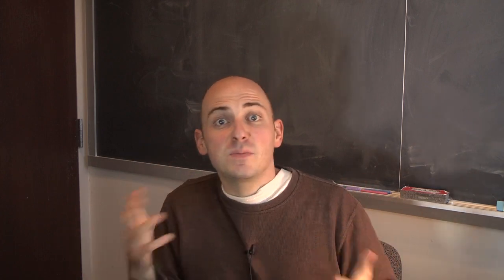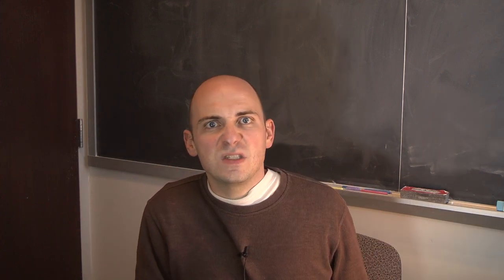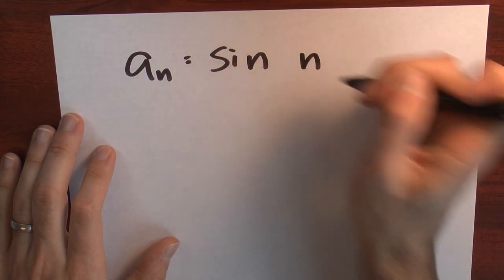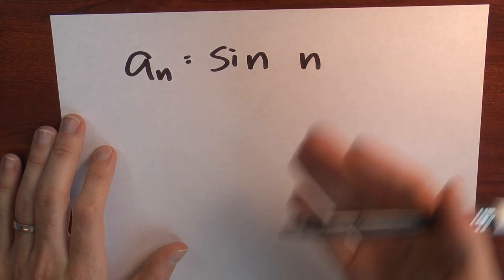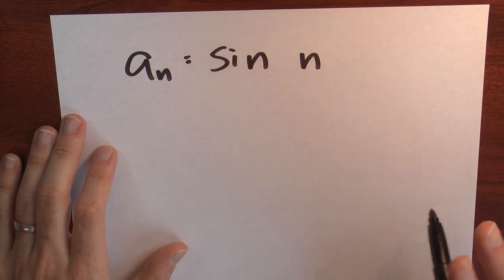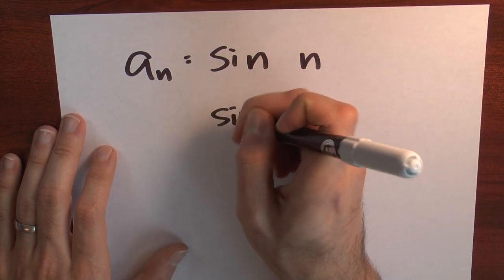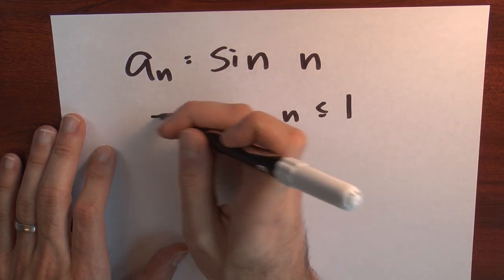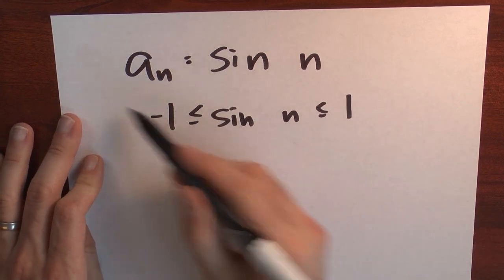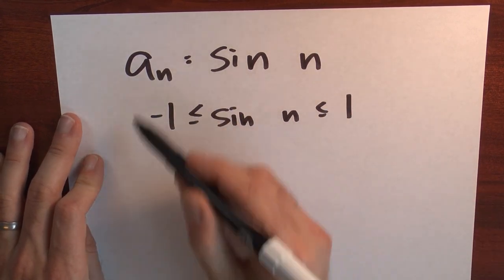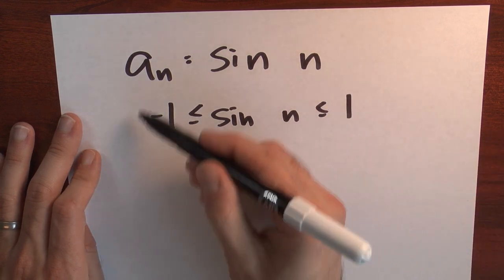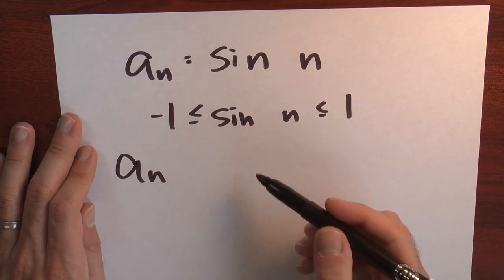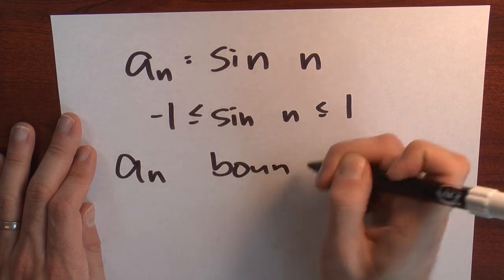Now it'll be fun to make up some sequences and try to figure out whether those sequences are bounded. For example, let's think about the sequence a_n = sin(n). Is this sequence bounded above, bounded below, bounded, or neither? Well, what do we know about sine? No matter what I plug into sine, it's no bigger than 1 and no smaller than −1. Consequently, the sequence is bounded above by 1 and bounded below by −1. And since the sequence is bounded both above and below, the sequence is bounded.